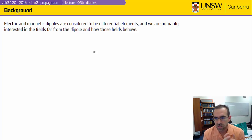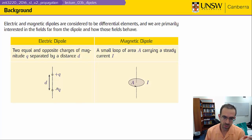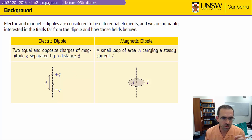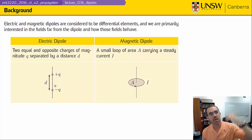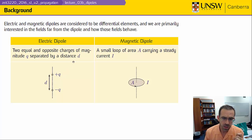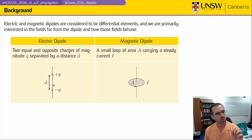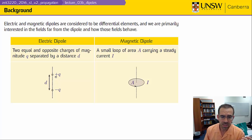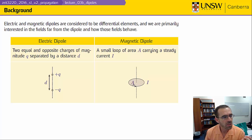We consider electric and magnetic dipoles as differential elements. An electric dipole is a positive and a negative charge which are very close to each other, and we're going to be interested in the fields very far away. So if these two charges are separated by some small distance, we're making observations very far away. In the magnetic case, we don't have point charges — a small loop of current is going to create magnetic fields that are of interest to us.